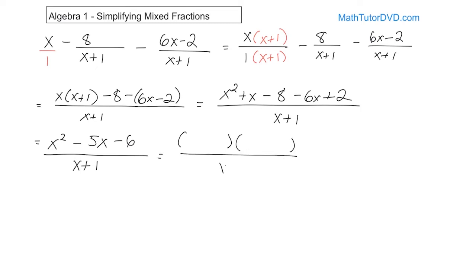This is a trinomial — let me try to factor it and see if it cancels with the denominator. I need two numbers that multiply to negative six and add to negative five: positive one and negative six work. So the factorization is x plus one times x minus six. The x plus one in the numerator cancels with the x plus one in the denominator, and the final answer is just x minus six.